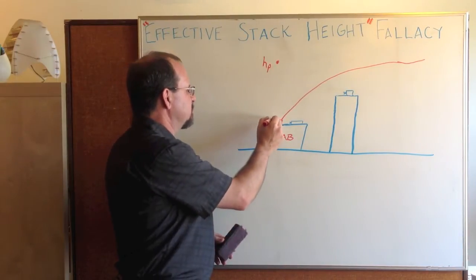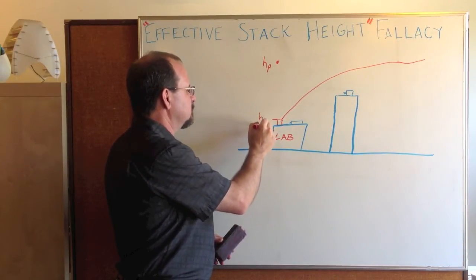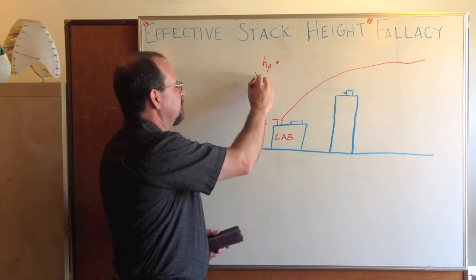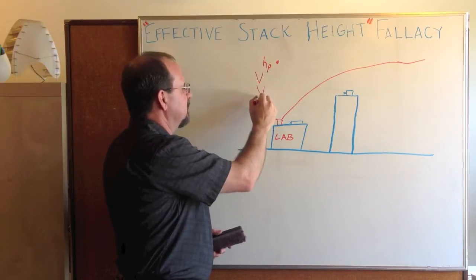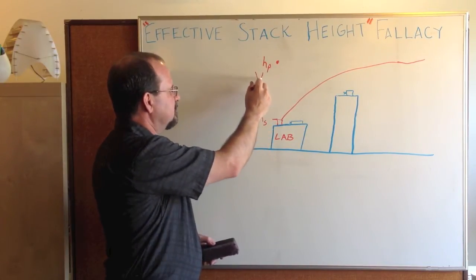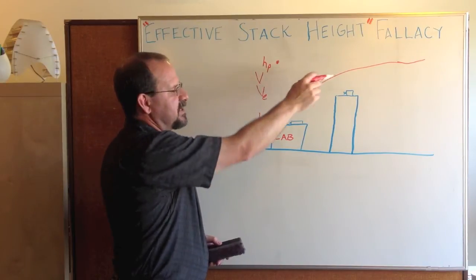The reason that's dangerous is that you have a physical stack height, and that's what you're designing. You also have volume flow rate and an exit velocity. You use your physical stack height, the flow rate, and the velocity to calculate the plume rise.